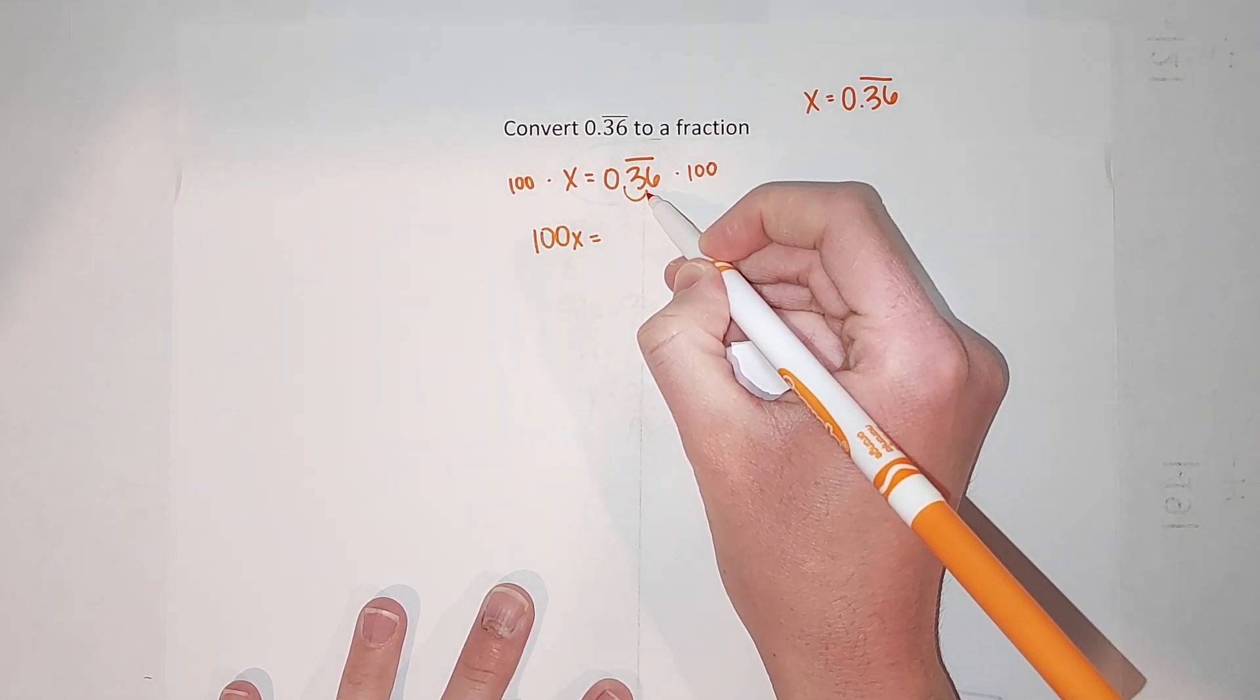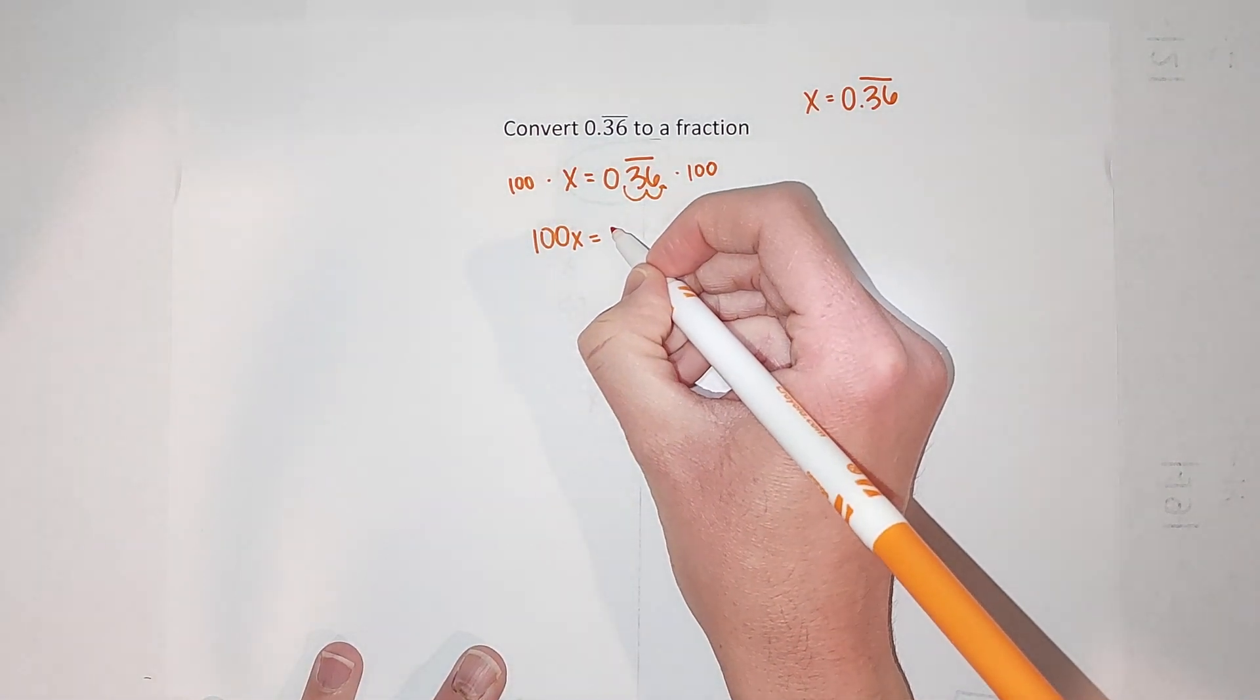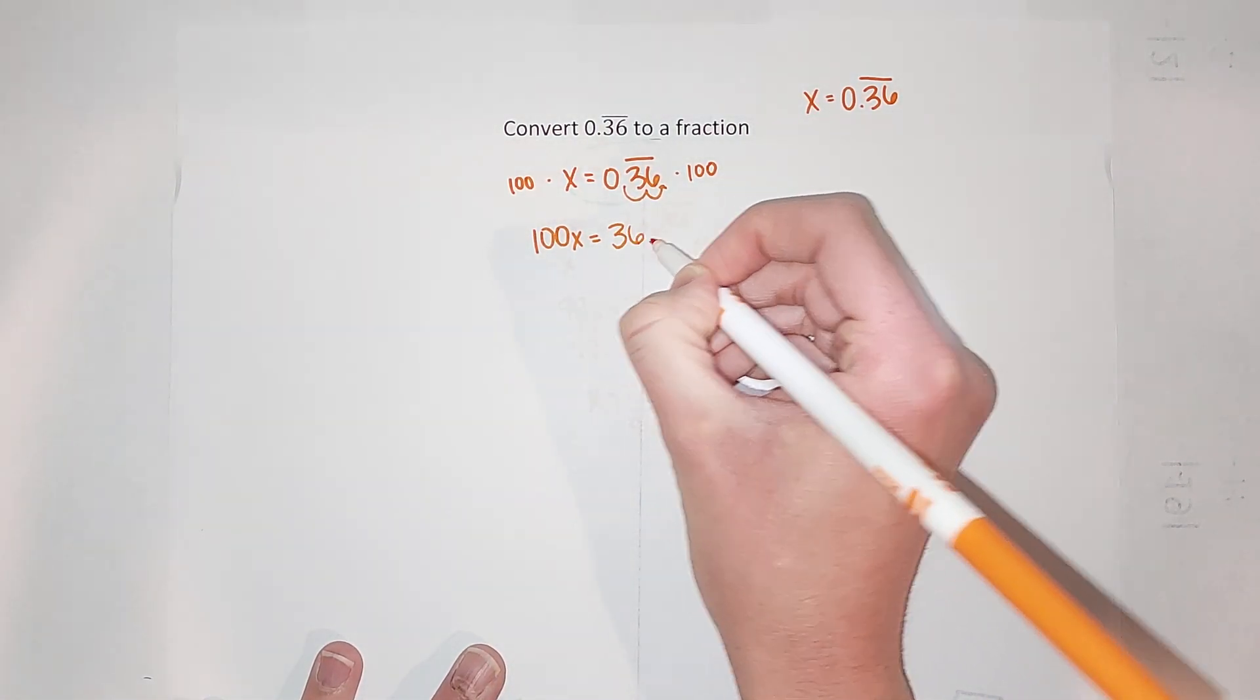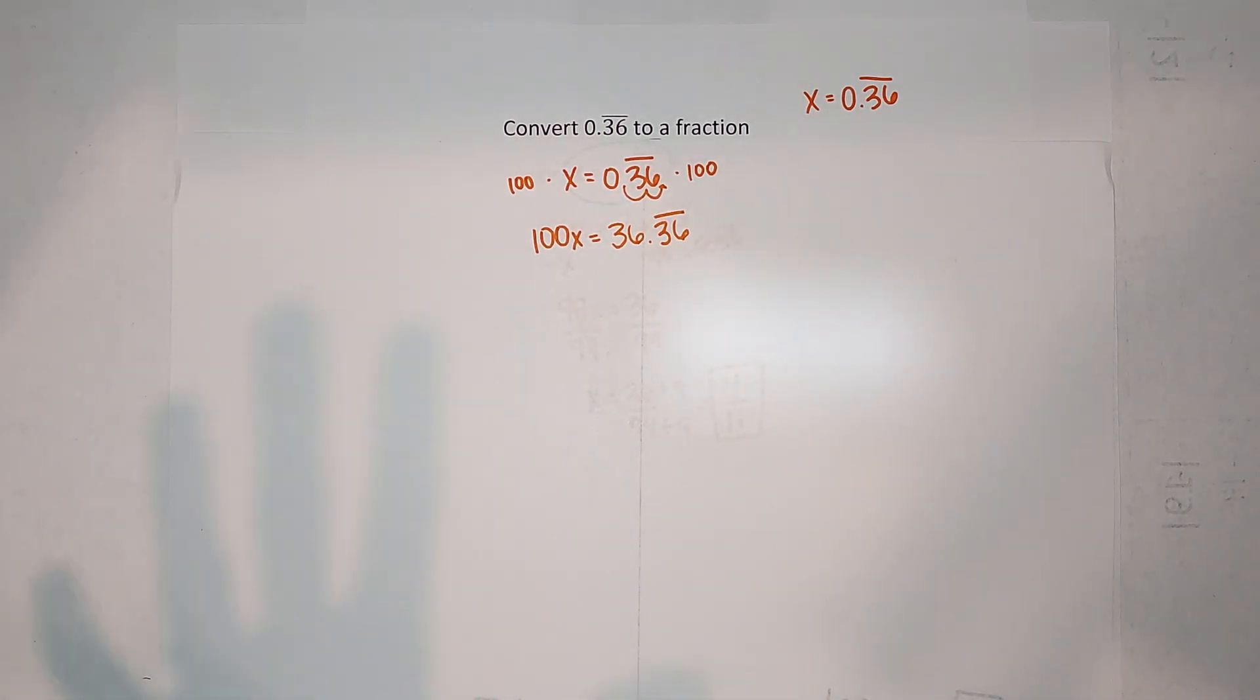Now if you're like, why could she do that? As long as we multiply by the same thing on both sides, it's still true, it's still equal. And it's just a strategy to help us convert this. Now we are going to next subtract x from both sides. Again, as long as I do it from both sides, we're good.